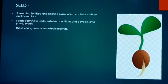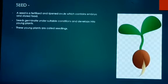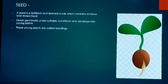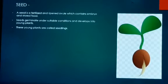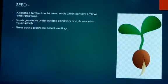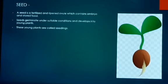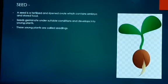Let us talk about seed first. What is seed? Seed is a fertilized and ripened ovule. As I told you when teaching about fruit, fruits develop from the ovaries and seeds are developed from the ovules. This seed contains an embryo — the future plant — because the embryo grows into the future plant. Along with that, the seed also contains food which provides nourishment to the developing embryo.